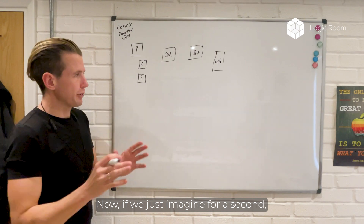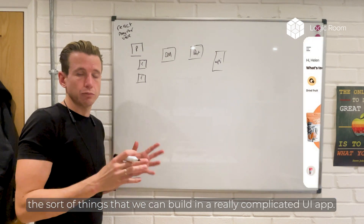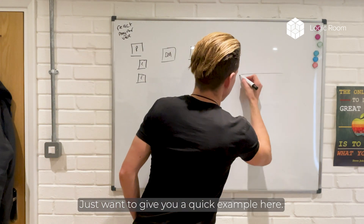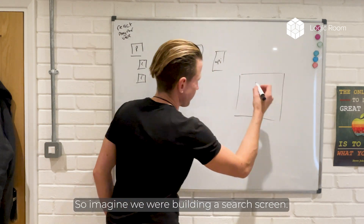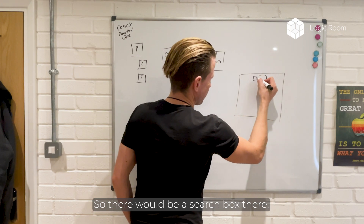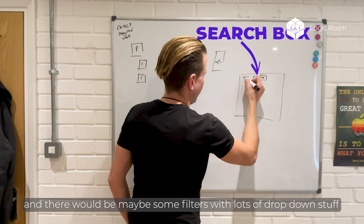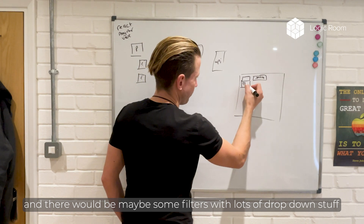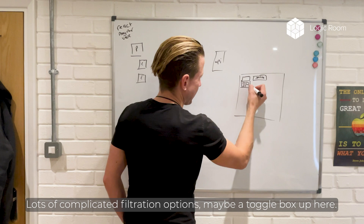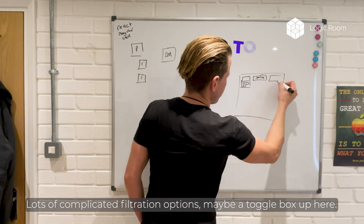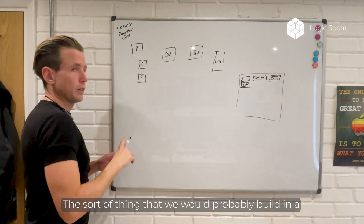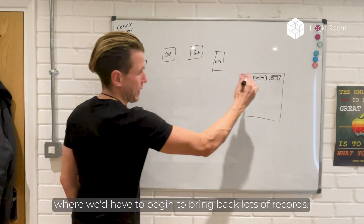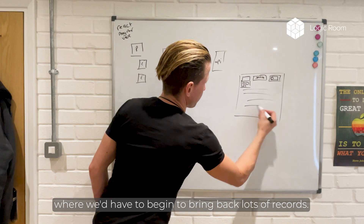If we just imagine for a second the sort of things that we can build in a really complicated UI app — imagine we were building a search screen. There would be a search box, maybe some filters with lots of drop-down stuff, little check boxes, lots of complicated filtration options, maybe a toggle box. The sort of thing we'd probably build in a relatively complex business app where we'd have to bring back lots of records.